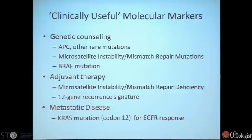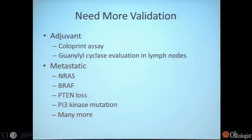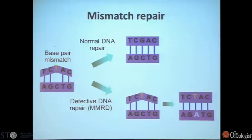In the adjuvant setting, decision making again can be dependent upon mismatch repair deficiency, and we'll talk about that some more. Lisa spent a little bit of time talking about a multi-gene assay for breast cancer, the Oncotype assay. There's also a similar assay for colon cancer, and I'll talk about some of the uses there. In metastatic disease, our one useful therapy-driving marker has been KRAS in colon cancer, and there are others that require more validation.